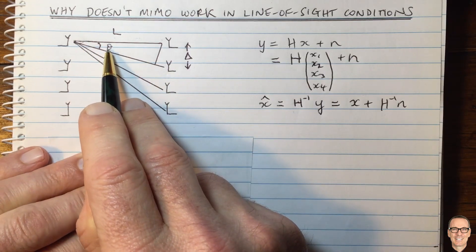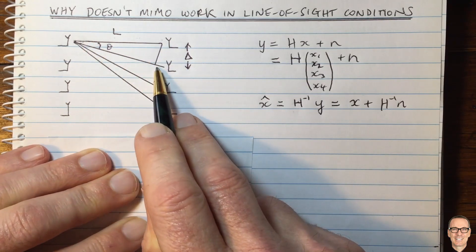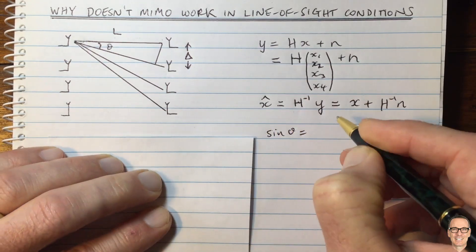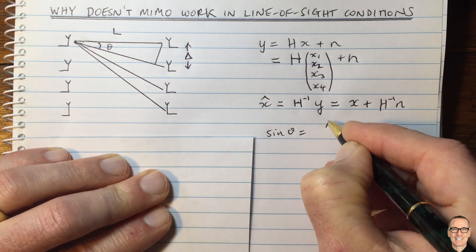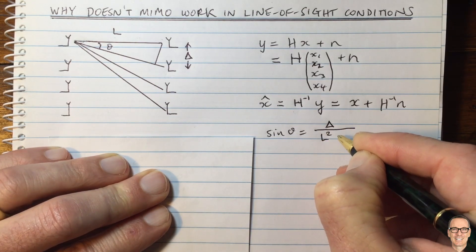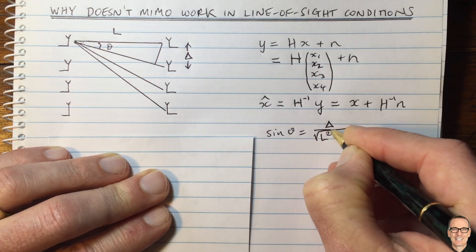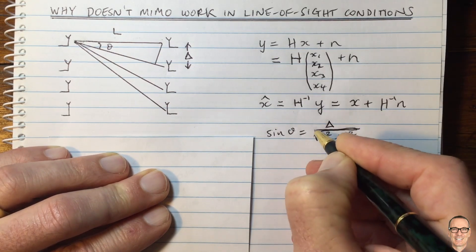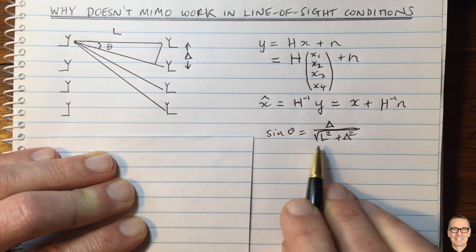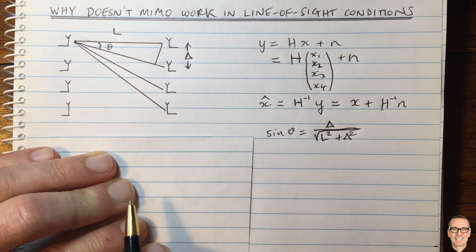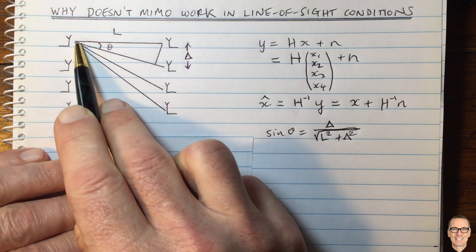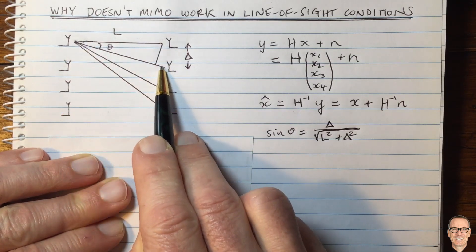So we can write an expression involving the angle between these two paths. We've got that sine theta equals delta divided by the square root of L squared plus delta squared. This is just using the trigonometric expression about the opposite over the hypotenuse for sine of theta.